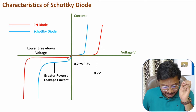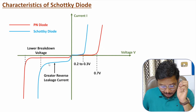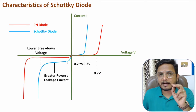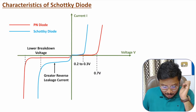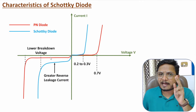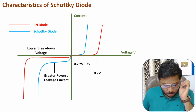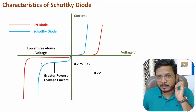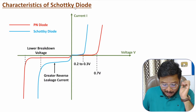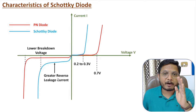In reverse bias characteristics, the Schottky diode has greater reverse leakage current — typically around 70 microamperes to 140 microamperes. With the PN junction diode, the reverse leakage current is much lower, typically around 1 to 2 microamperes. The breakdown voltage is also lower with the Schottky diode, so it has both lower breakdown voltage and higher leakage current, which is why one cannot use the Schottky diode in high power applications.